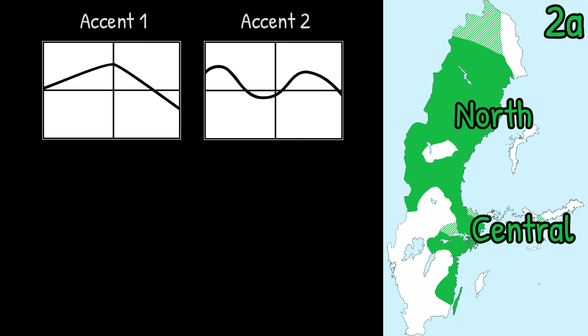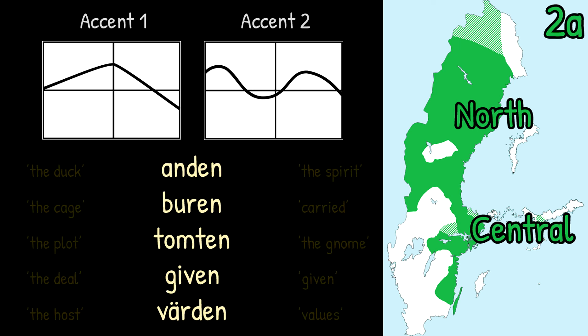Type 2a is primarily found in eastern central Sweden, most of northern Sweden, as well as along the south-eastern coast. This is the type you're already familiar with, as it's the one I presented in the other video. As a type 2, it has a single pitch peak in Accent 1 and a double peak in Accent 2. In Accent 1, the pitch rises and peaks after the stressed vowel, while in Accent 2 it immediately peaks and then falls on the stressed vowel before peaking again on the unstressed vowel.